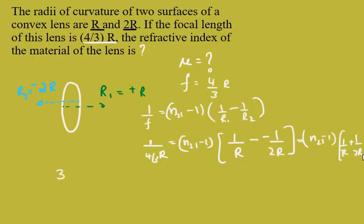In this 4 by 3R, 3 will go to the numerator so 3 by 4R will be equal to n to 1 minus 1 into 1 by R plus 1 by 2R. Now this we can simplify easily by multiplying the numerator by 2. So 2 by 2R will come.